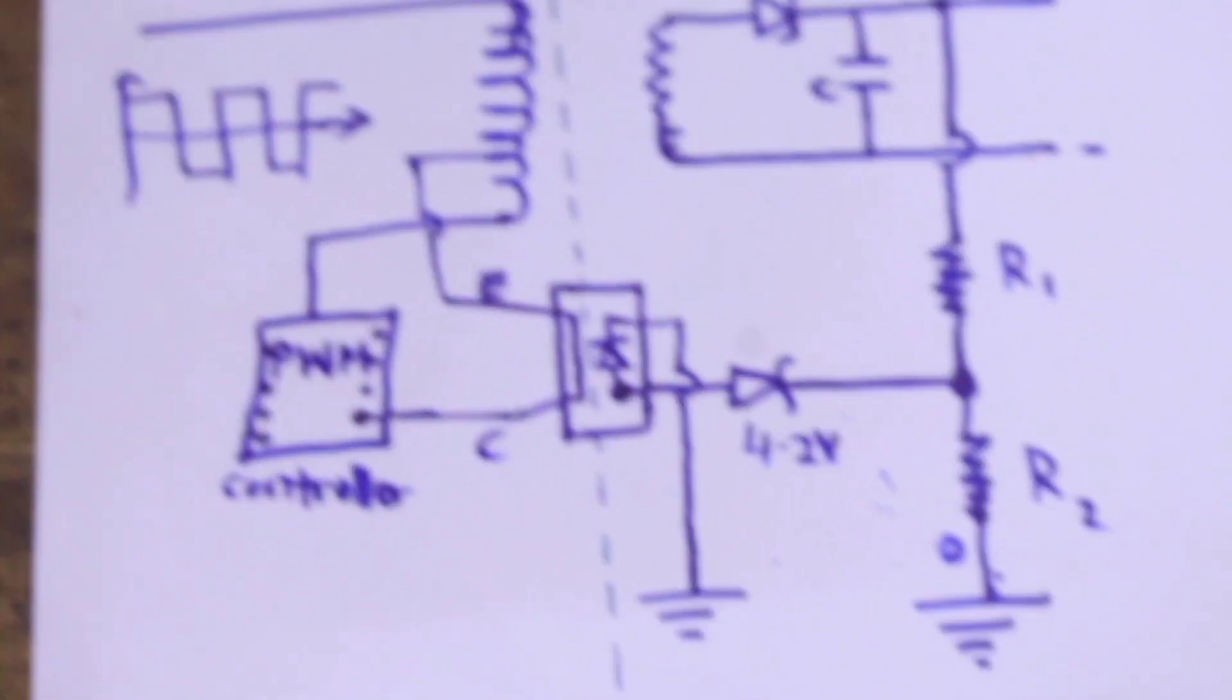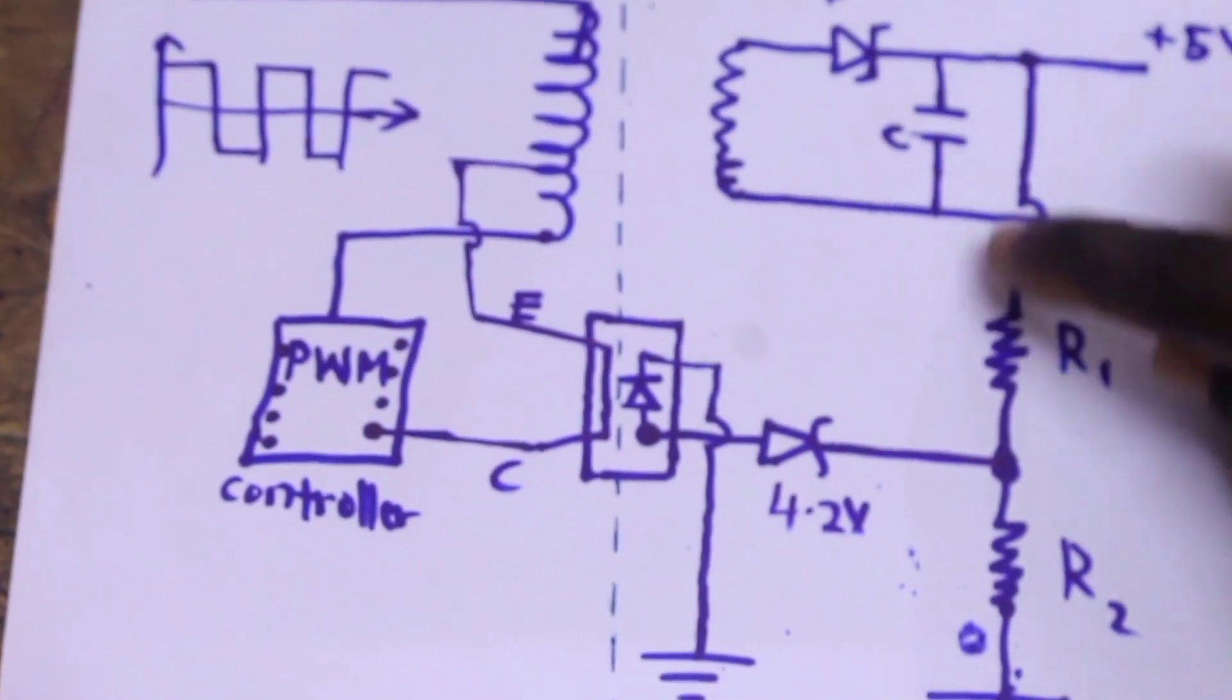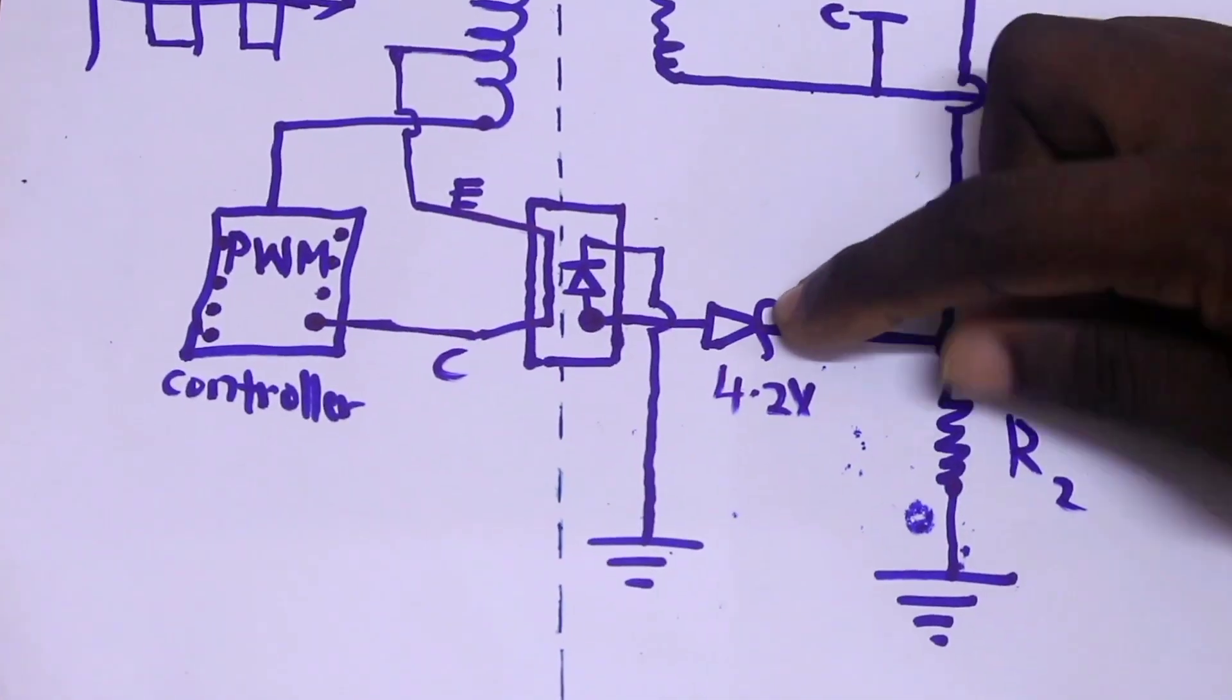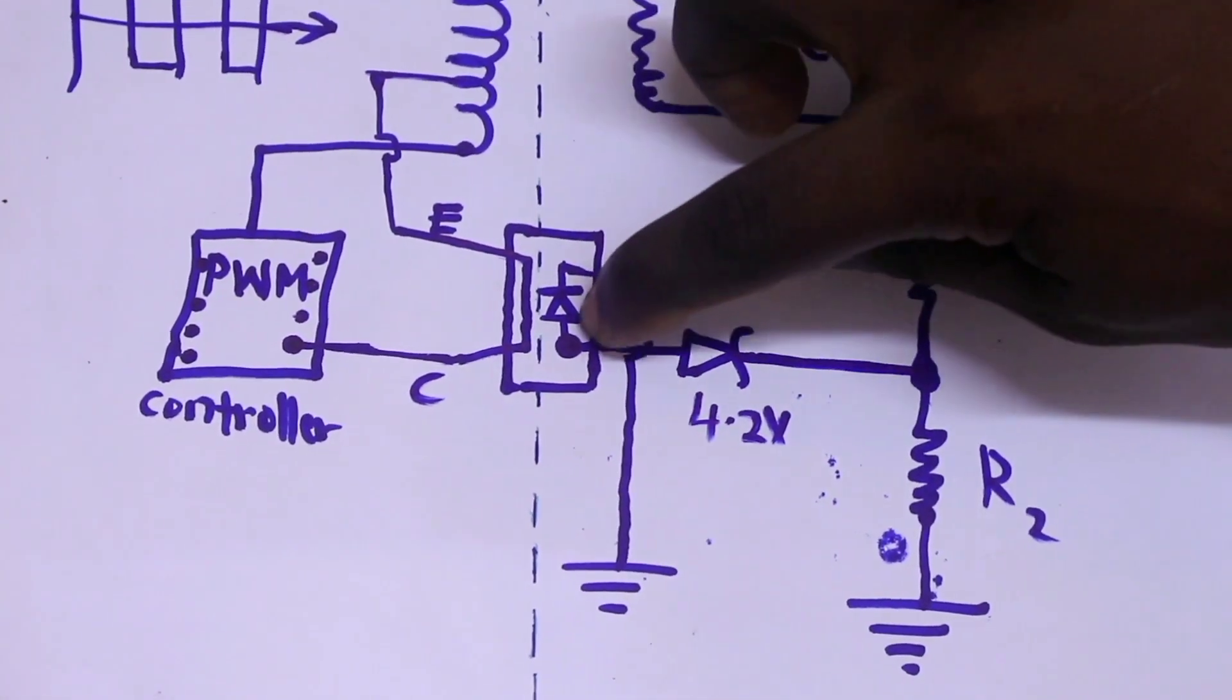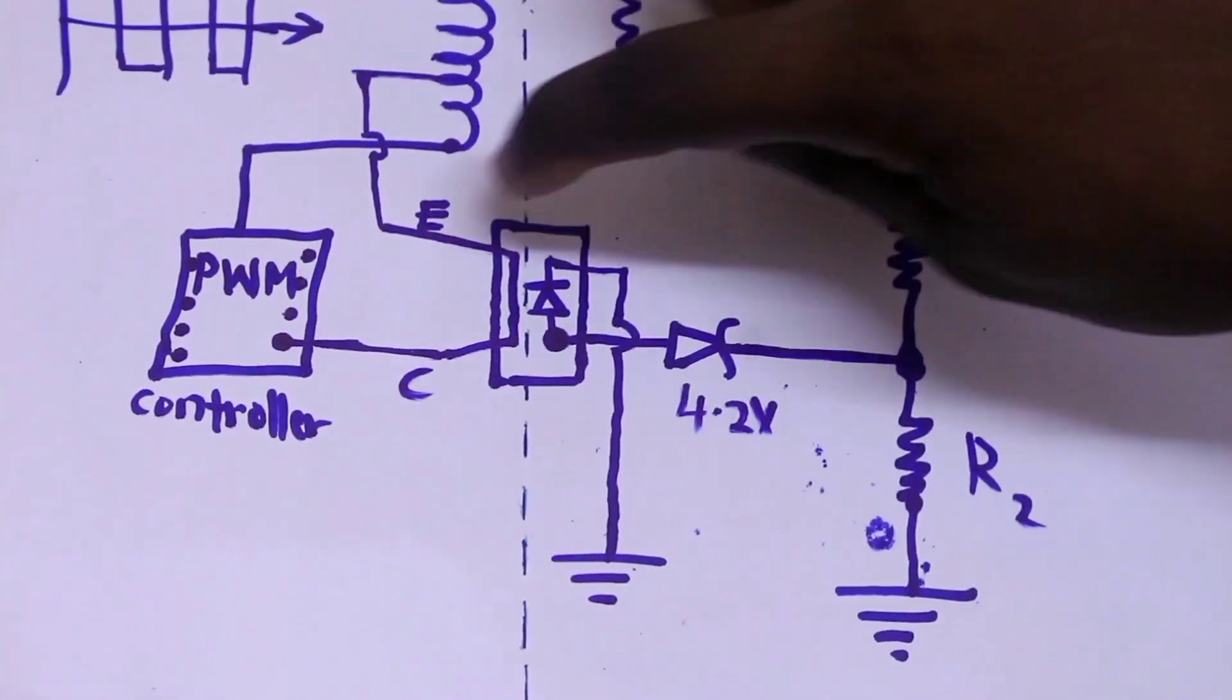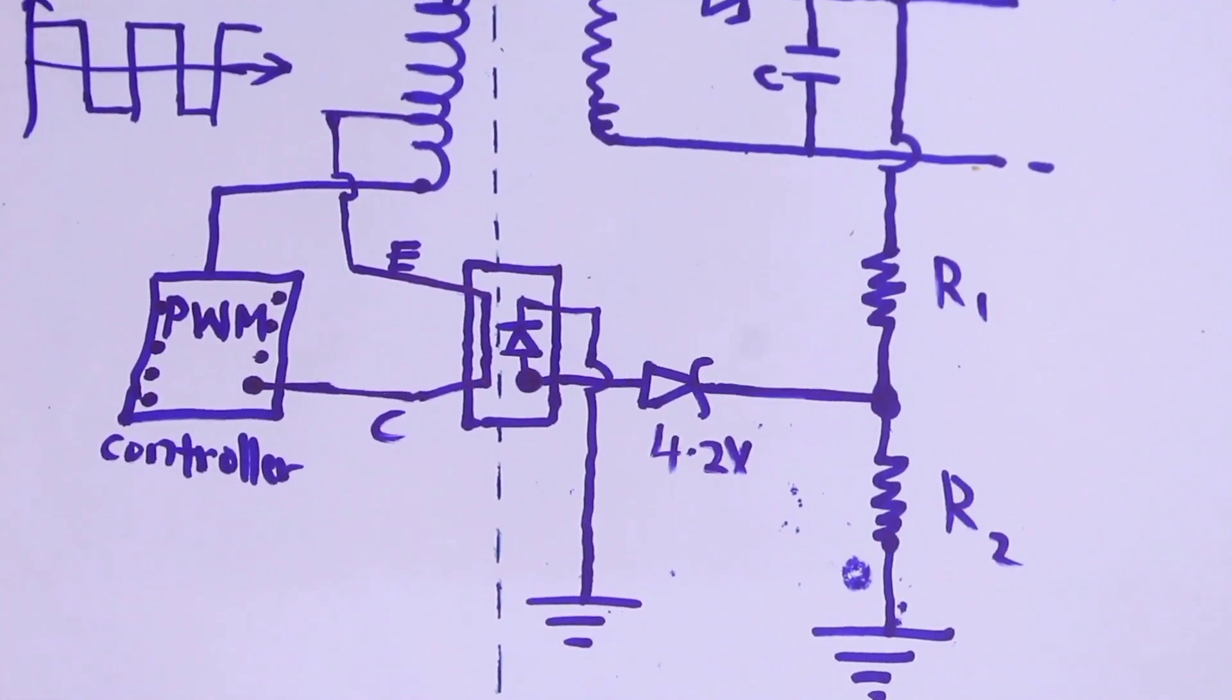This is where we use the optocoupler in our power supply. You can see from the output, the feedback is here, the zener diode is here, and then this is now the optocoupler. This is the diode in the optocoupler, and this is the phototransistor inside the optocoupler.